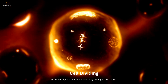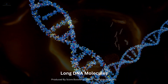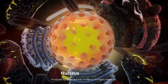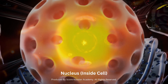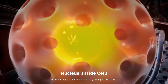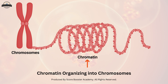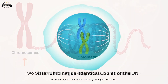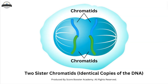As cells divide and prepare for cell division, the long DNA molecules must be compacted further to fit within the cell's nucleus. This process involves organizing the chromatin into chromosomes. During cell division, the chromatin condenses into visible, condensed structures known as chromosomes. Each chromosome is made up of two sister chromatids, which are identical copies of the DNA.